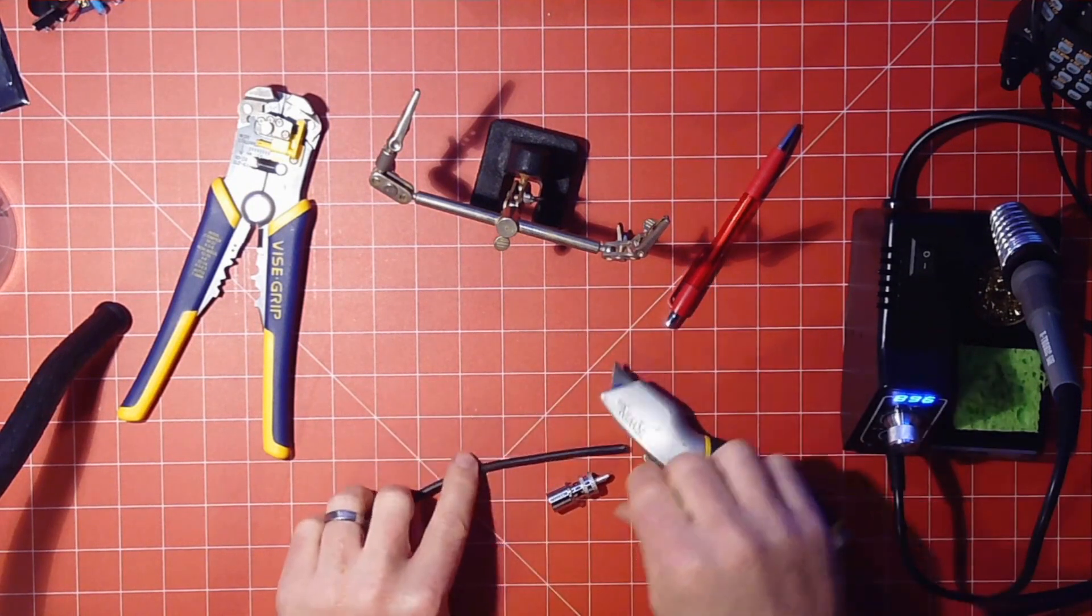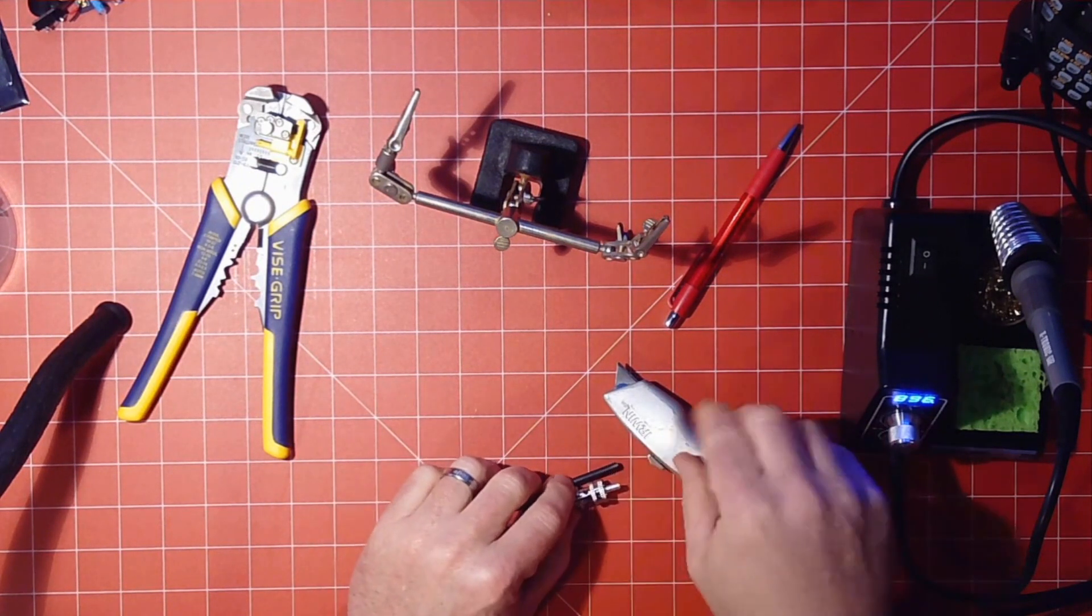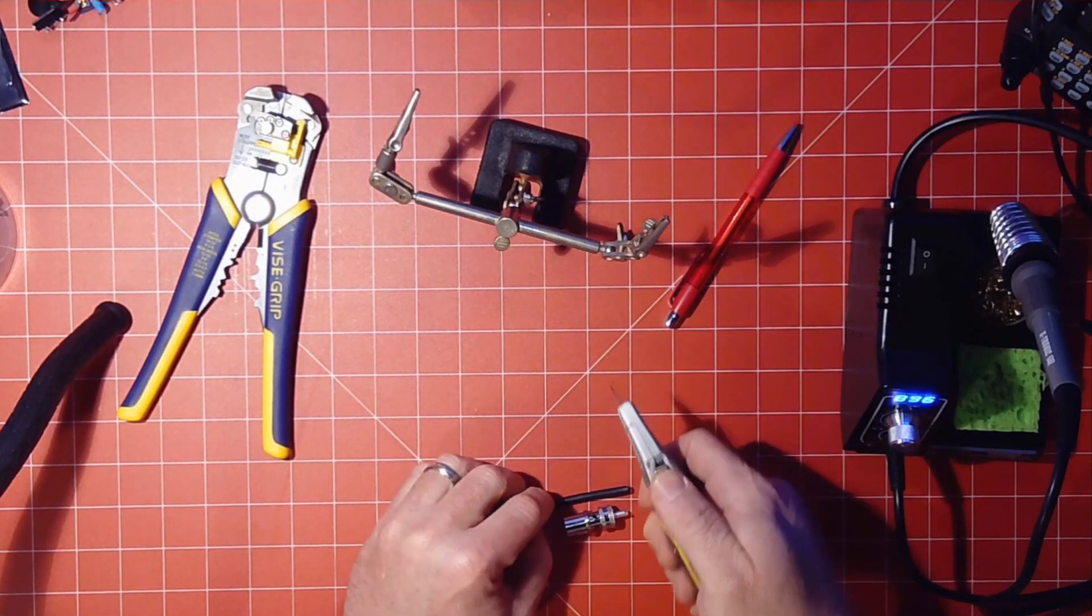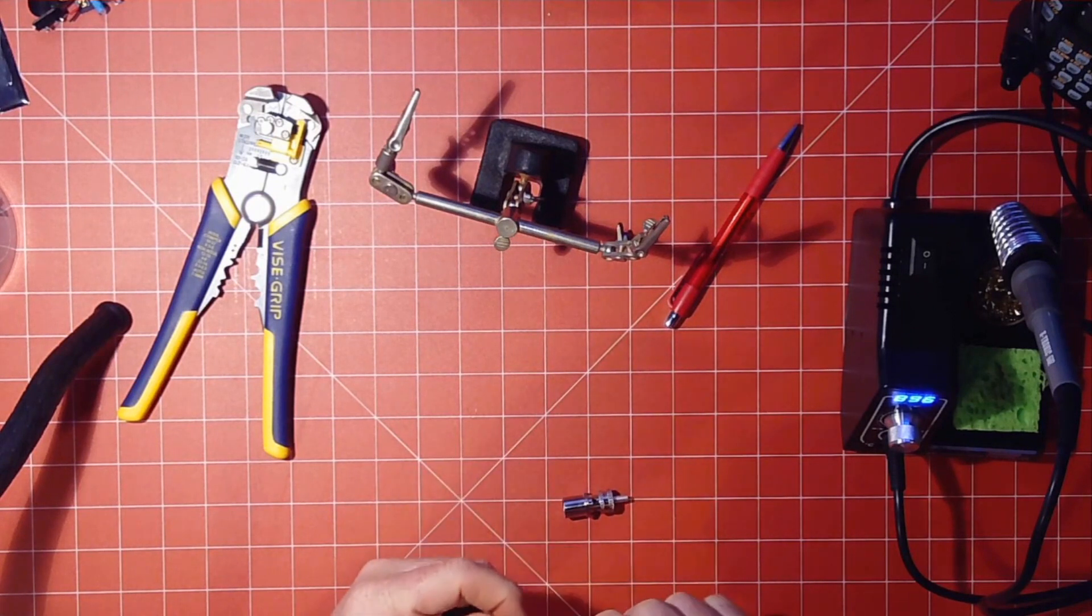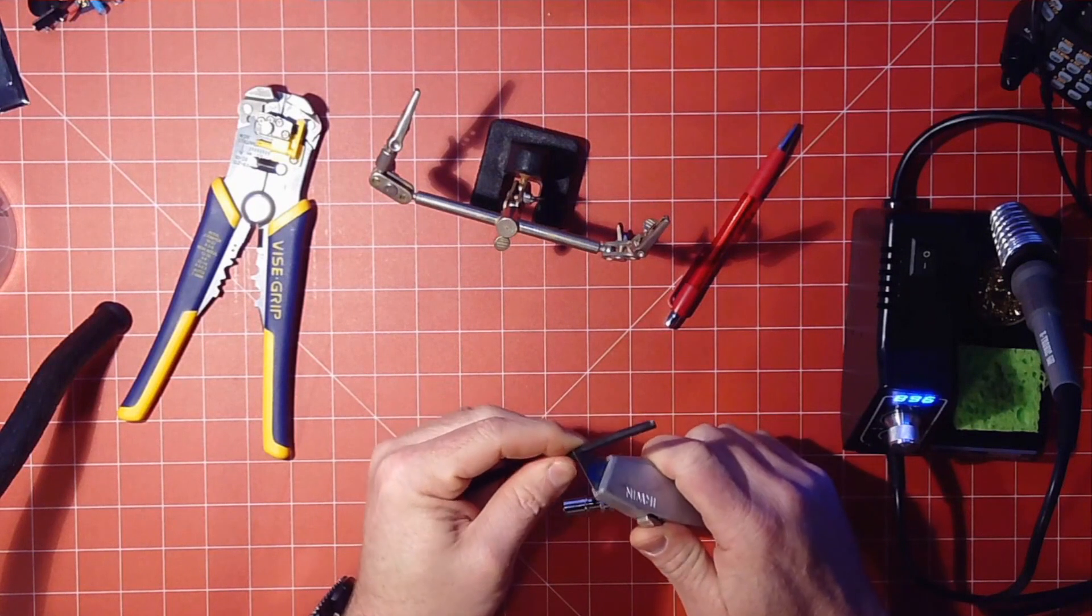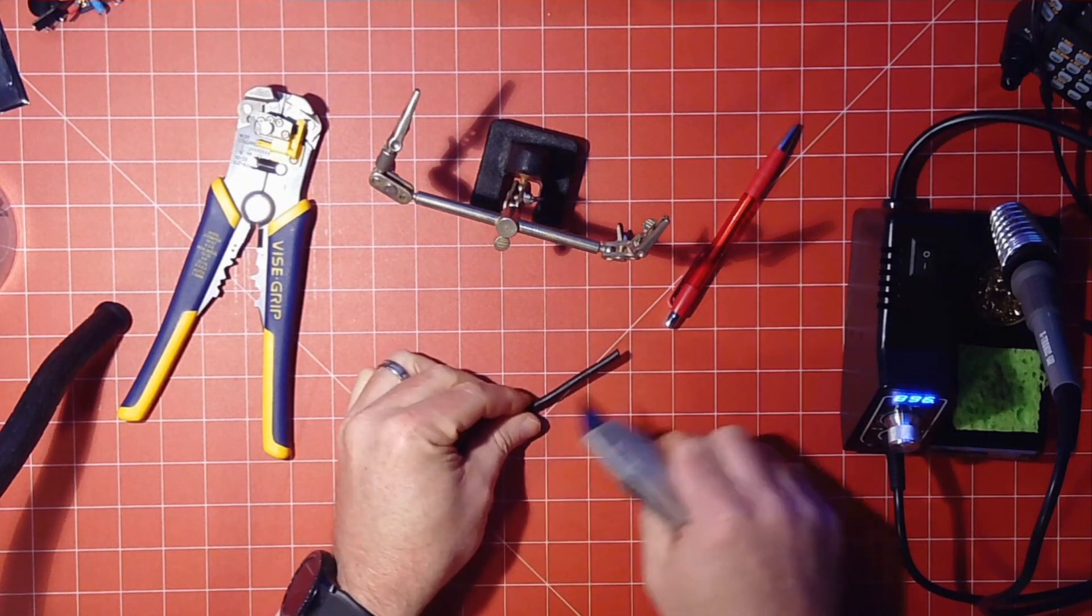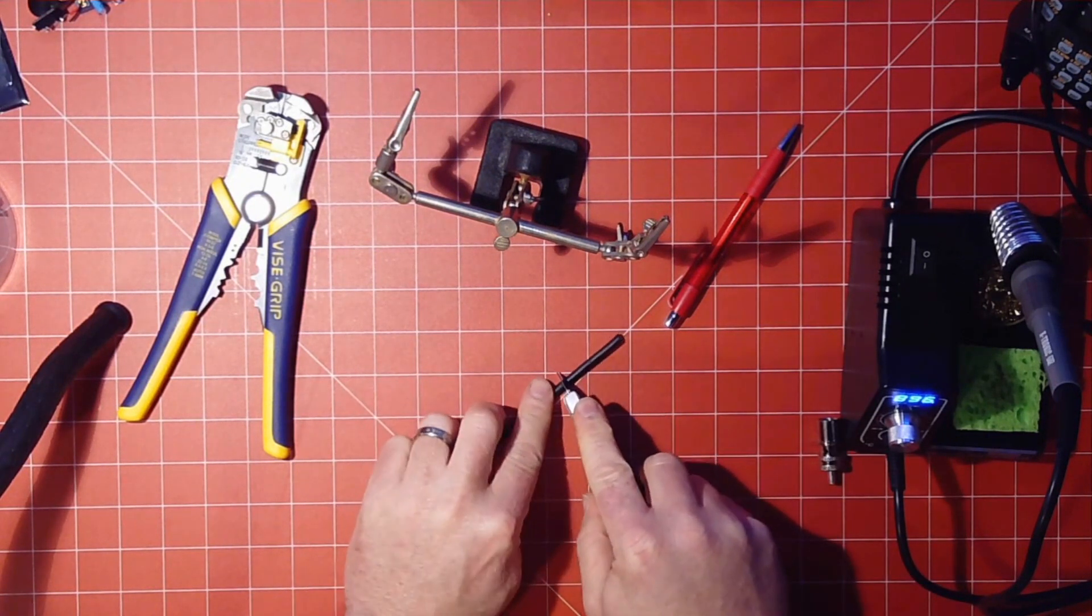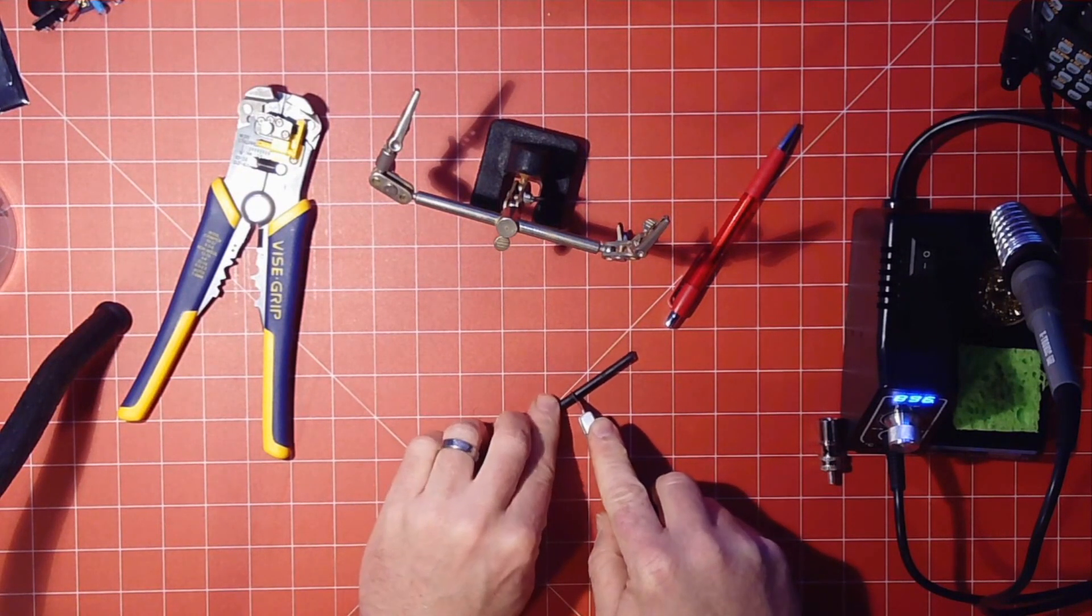Alright, so what we're going to do is we're going to measure it. And like I said, this is not high-quality coax here, so we are going to actually cut about there. And you just want to take your knife, let me get that so you can see it, and slowly roll it.